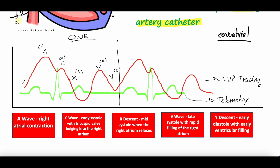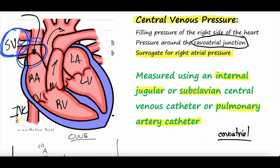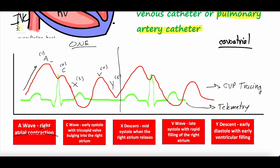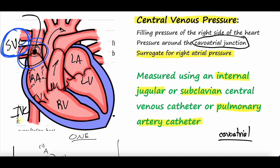The A wave is right atrial contraction. The catheter is measuring pressure right at the cavoatrial junction, so when the right atria squeezes, that increases the pressure in the right atrium, which increases the CVP. After that peak, the pressure descends until you get a little blip — a small increase again — this is the C wave. The C wave is early systole with the tricuspid valve bulging into the right atrium.